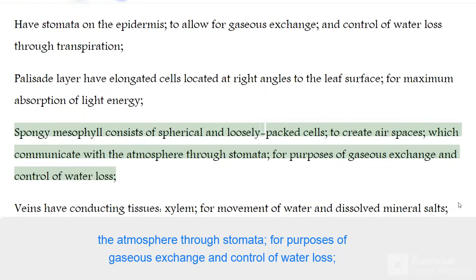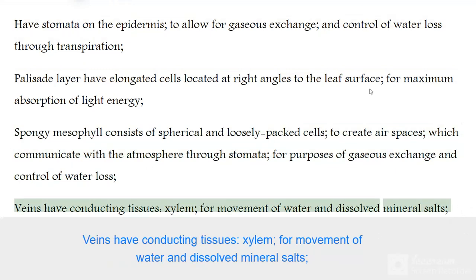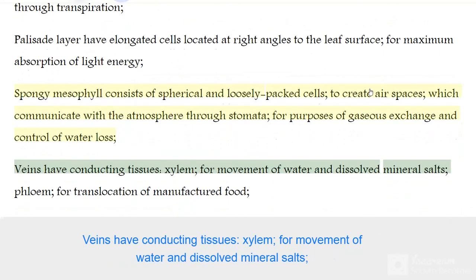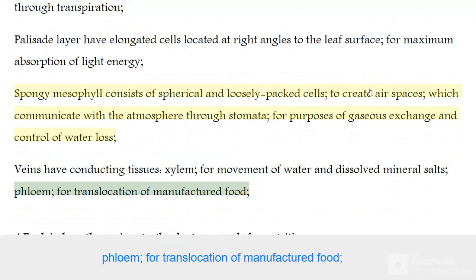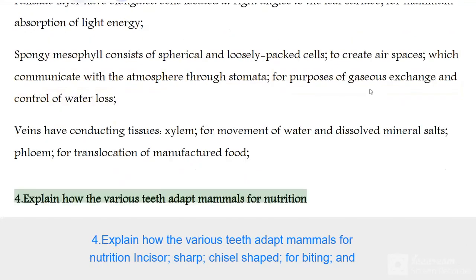The spongy mesophyll air spaces serve purposes of gaseous exchange and control of water loss. Veins have conducting tissues: xylem for movement of water and dissolved mineral salts, and phloem for translocation of manufactured food.